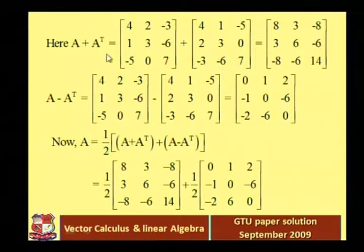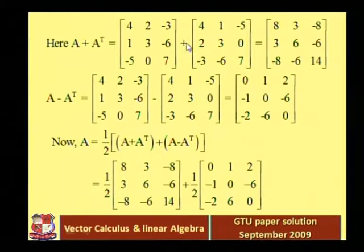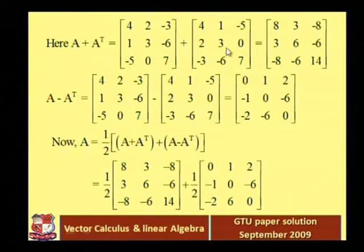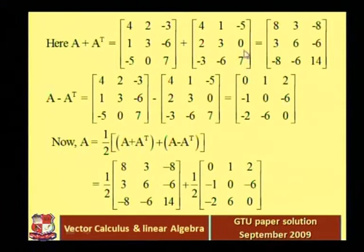This is our A plus A transpose. A is 4, 2, minus 3, 1, 3, minus 6, minus 5, 0, 7, plus A transpose. We are just interchanging the rows and columns: the row 4, 2, minus 3 becomes the first column, row 1, 3, minus 6 becomes the second column, and minus 5, 0, 7 becomes the third column — that is exactly the transpose of A.